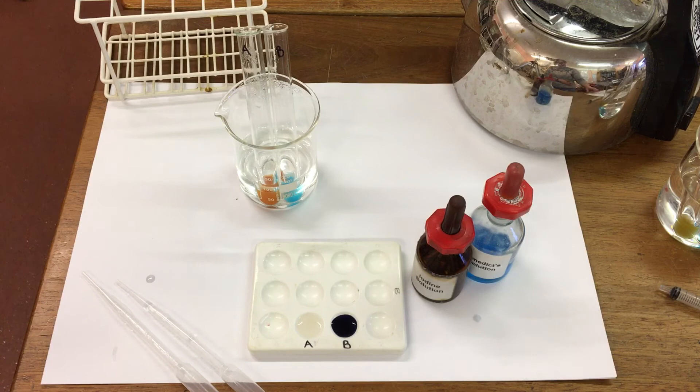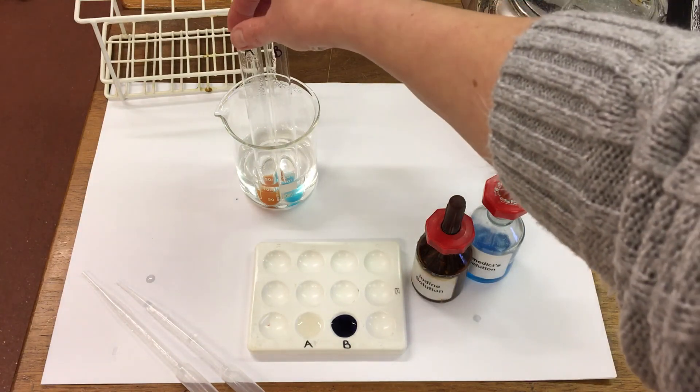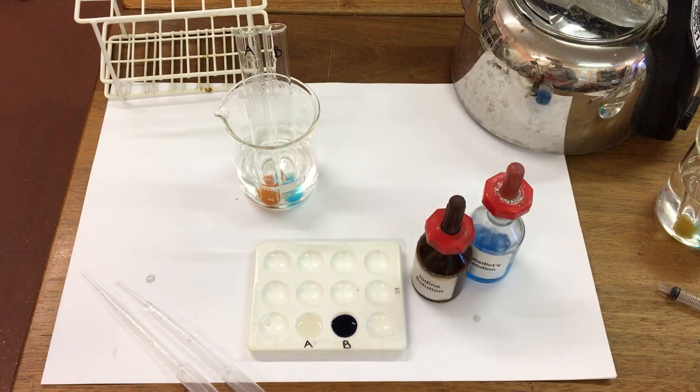So in conclusion, we can say that amylase has broken down all the starch in test tube A and produced glucose.